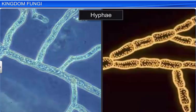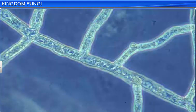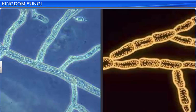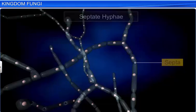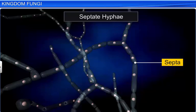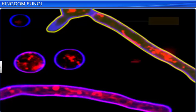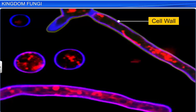There are two types of hyphae. The first type is made up of continuous tubes filled with multi-nucleated cytoplasm, and is called cenocytic hyphae. The second type of hyphae has septae, or cross walls. Apart from hyphae, fungi are distinguished by their cell walls, which are made of chitin and polysaccharides.